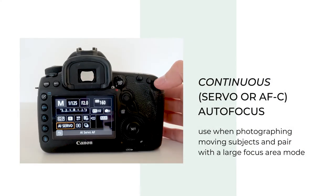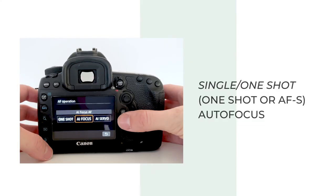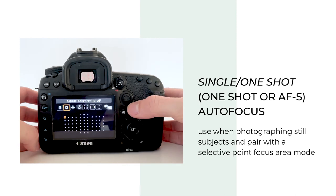You are probably like me and usually photographing wiggly subjects, which just makes it harder. My advice is to practice using autofocus correctly: try using continuous autofocus mode and a large focus area for a moving subject. Use one-shot and a selective focus area point when your subject can stand still.